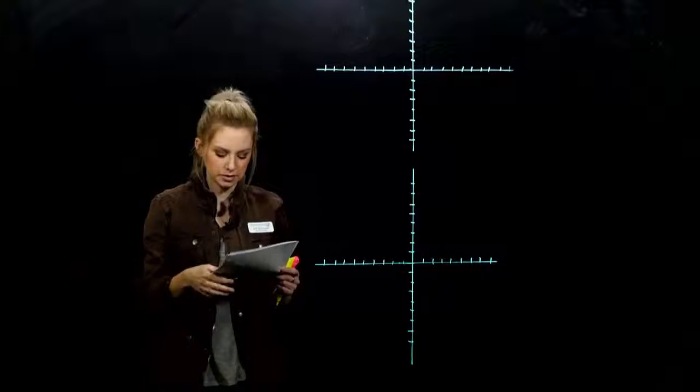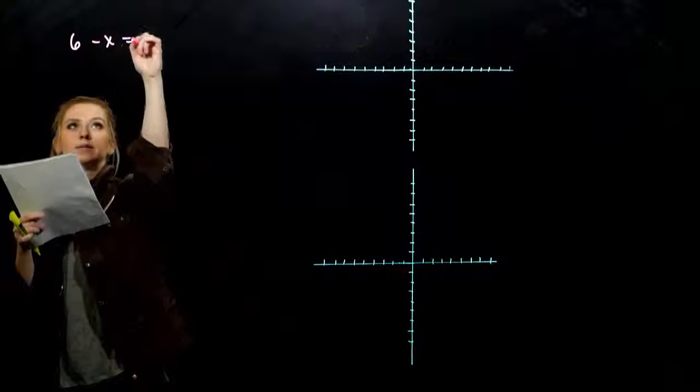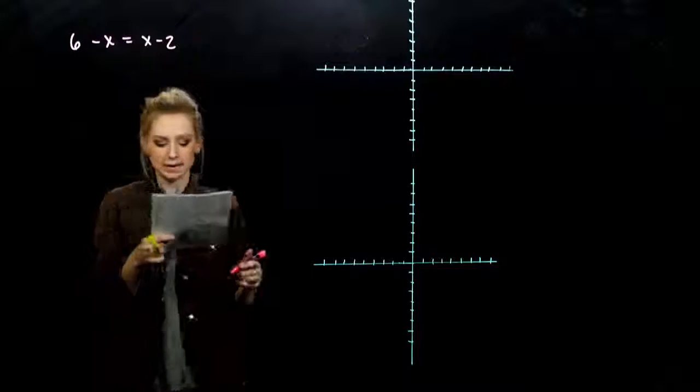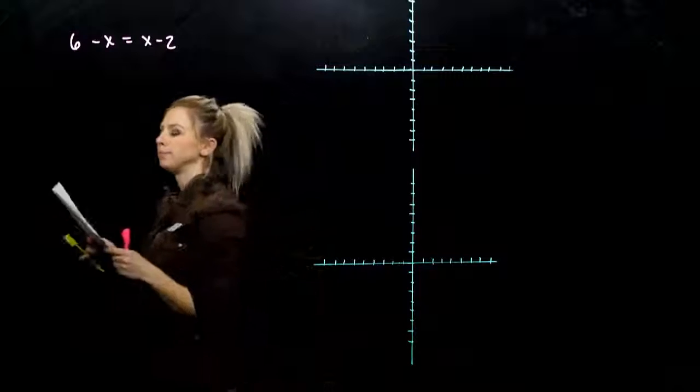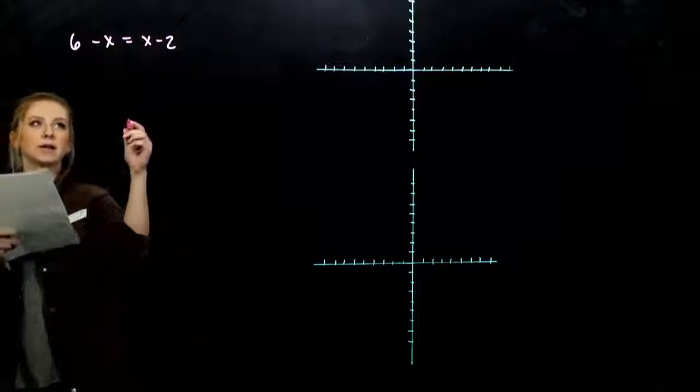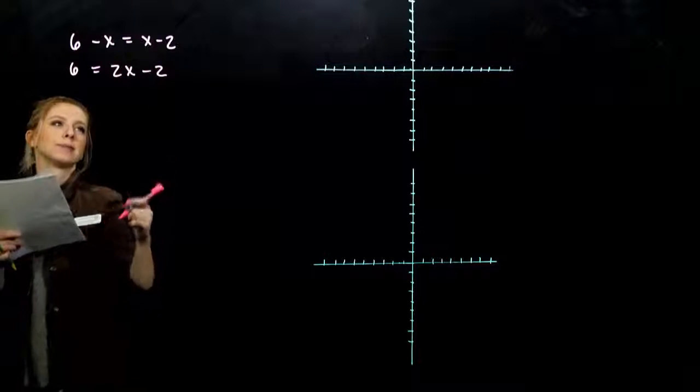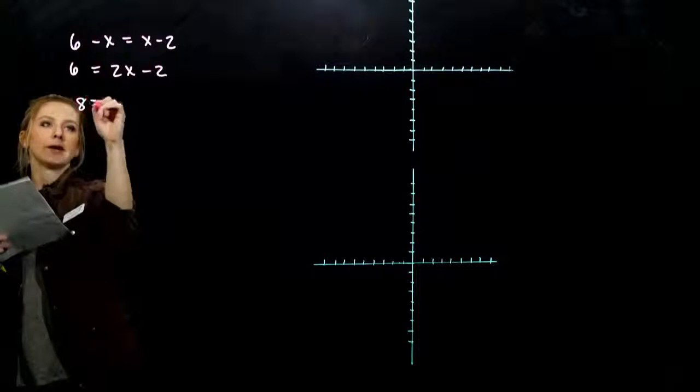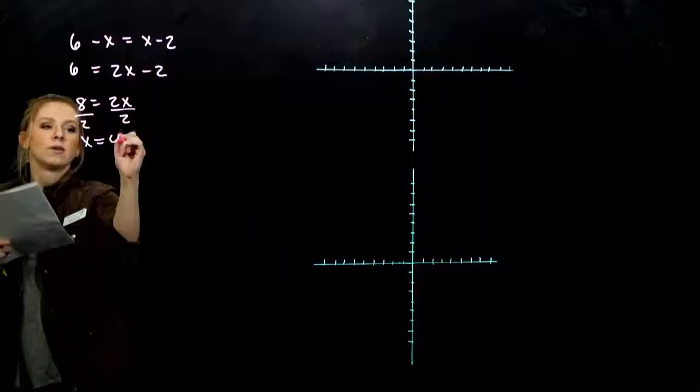So the last thing I want to show you is with some technology. So we want to consider this equation. We can solve it algebraically for x, no problem. If I want to get the x's together, what am I looking at doing? I'm going to add x, add 2 to both sides. So 8 is 2x, so x is 4.